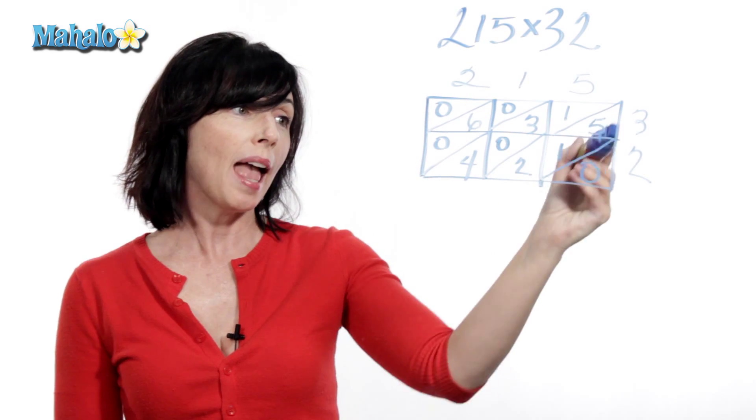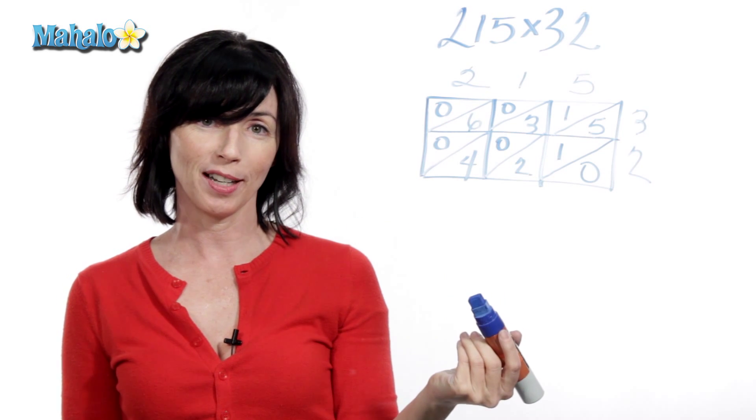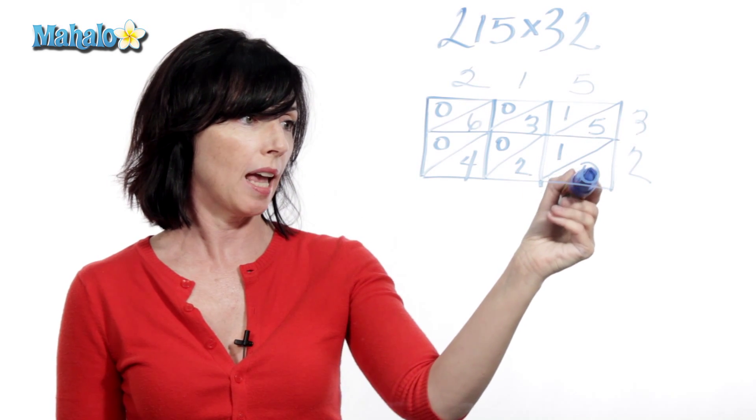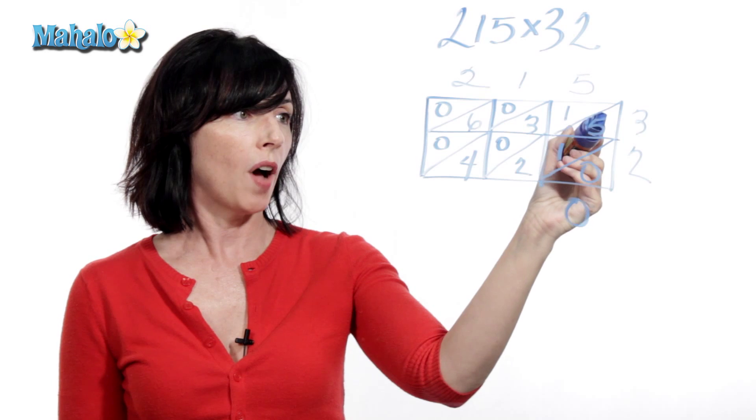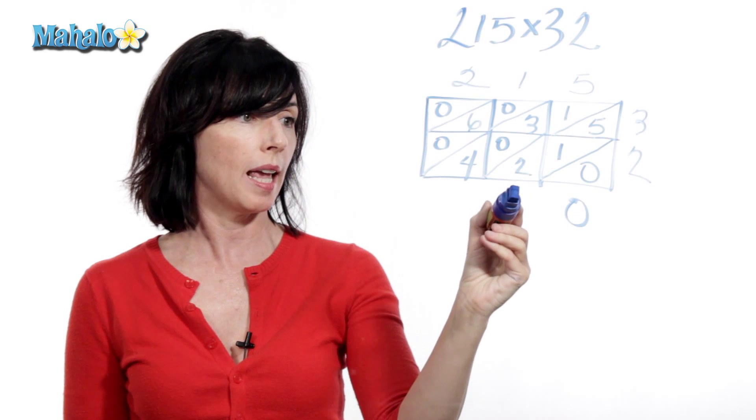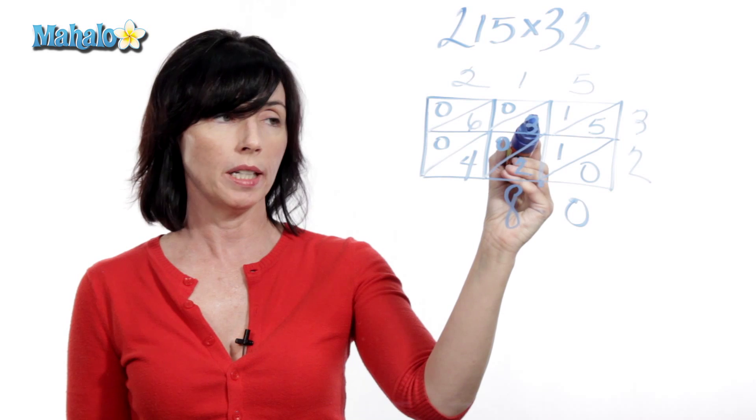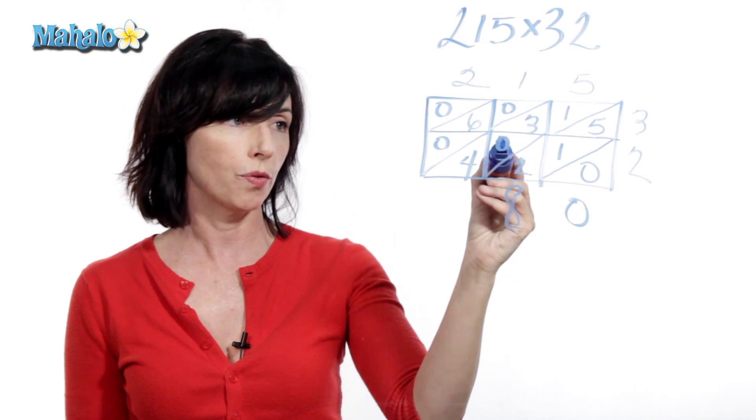Now, you add along all the diagonals to find out your answer. So, here we just have a 0. 5 plus 1 is 6, plus 2 is 8. 1 plus 3 is 4, plus 0 is still just 4.